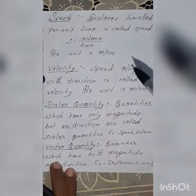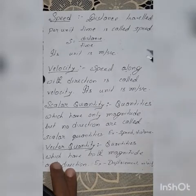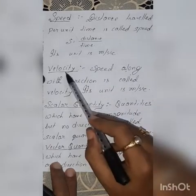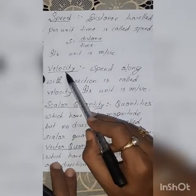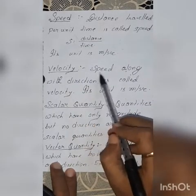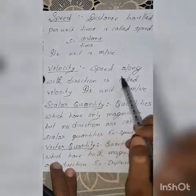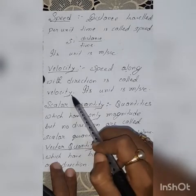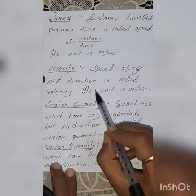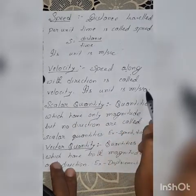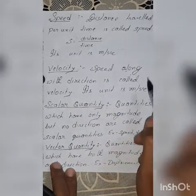Speed doesn't have any direction. If we add direction with speed, it becomes velocity. Speed along with direction is called velocity. Its unit is also meter per second.